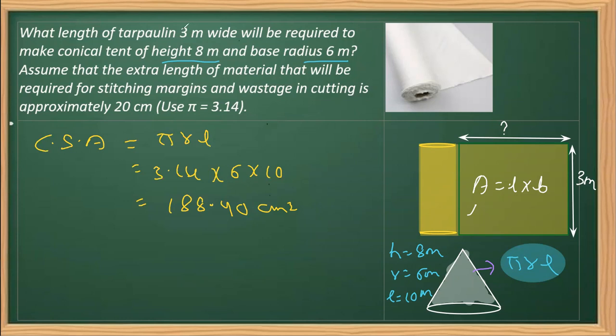Once we get this area, can I say that this is the same area which we are looking for, that is the area of the rectangular piece of cloth? So now, we will say that area of a rectangle is length into breadth. Therefore, I can equate this value, which is length multiplied by breadth, which is 188.40.